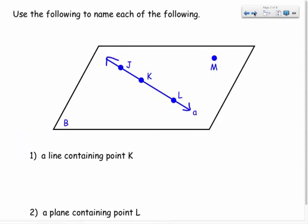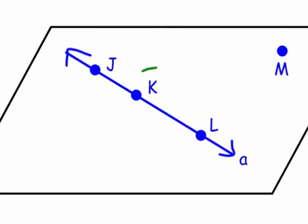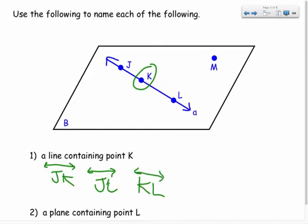Let's look at some practice. Number one asks for a line containing point K. Looking at point K, I can name this line several ways — line JK, line JL, or line KL — I just need two points with a line symbol on top. Another way: I can call it line a, because there's a lowercase 'a' at the end.